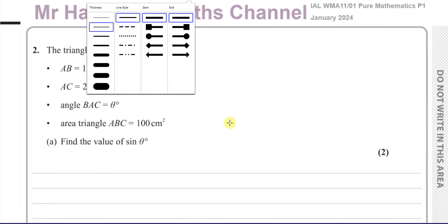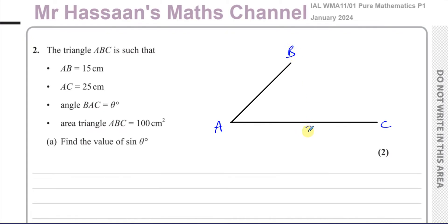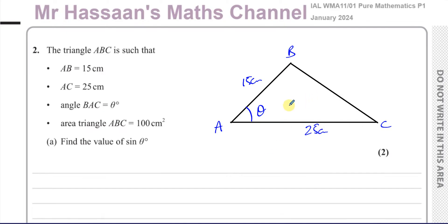Let's make a little diagram to illustrate this. We have a triangle — AC is longer than AB, so let's say this is A and this is C. AB is 15 centimetres, which is shorter than AC. Angle BAC is theta degrees, and B is positioned accordingly. AC is 25 centimetres and AB is 15 centimetres. This is one possible way the triangle could look, and the area of the triangle is 100 centimetres squared.